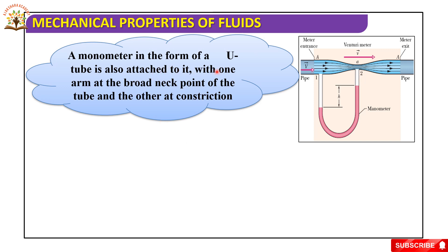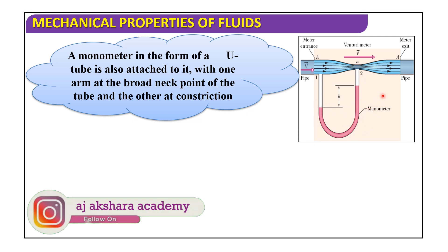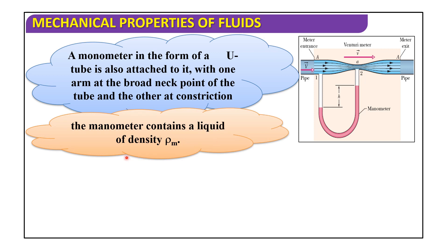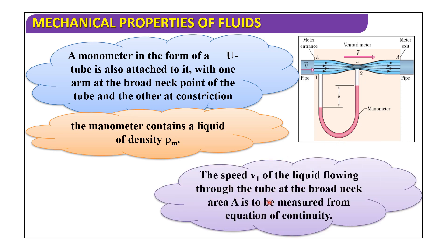A manometer in the form of a U tube is also attached to this with one arm at the broad neck point of the tube and the other at the constriction. The manometer contains a liquid of density ρm, that is manometer density.